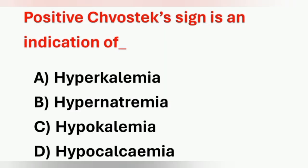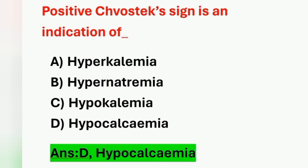Next question: positive Chvostek's sign is an indication of — option A: hypokalemia, option B: hyponatremia, option C: hypocalcemia (listed twice), option D: hypocalcemia. Chvostek's sign and Trousseau's sign are positive tests for hypocalcemia. Option D is correct. Positive Chvostek's sign means lightly tapping over the facial nerve in front of the ear causes contraction of the facial muscles.